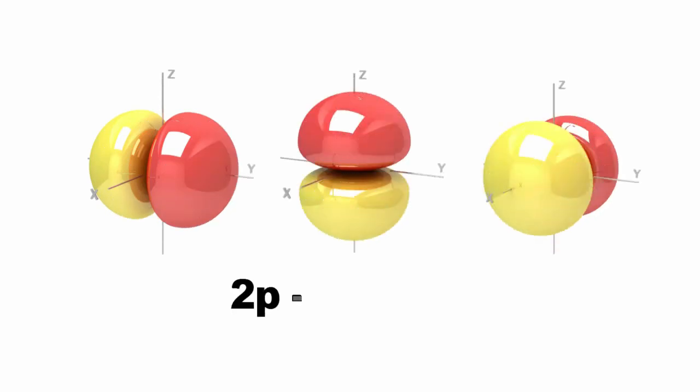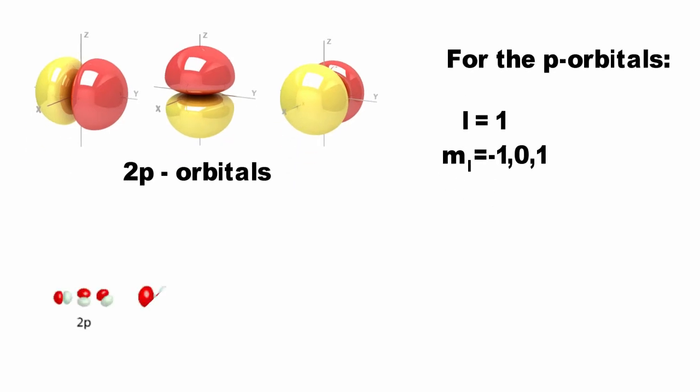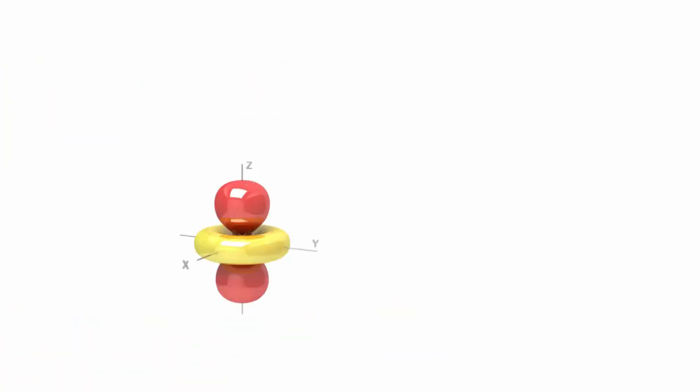For all P orbitals, L equals 1. m sub-L may then have three values: 1, 0, and negative 1. This means that there are three types of P orbitals for each value of N greater than and equal to 2.